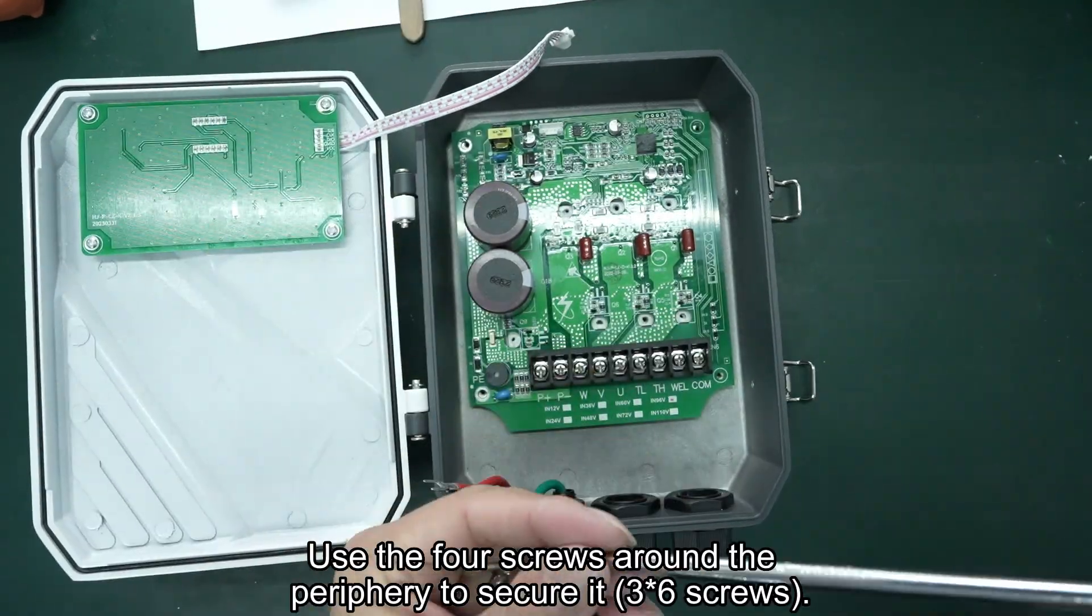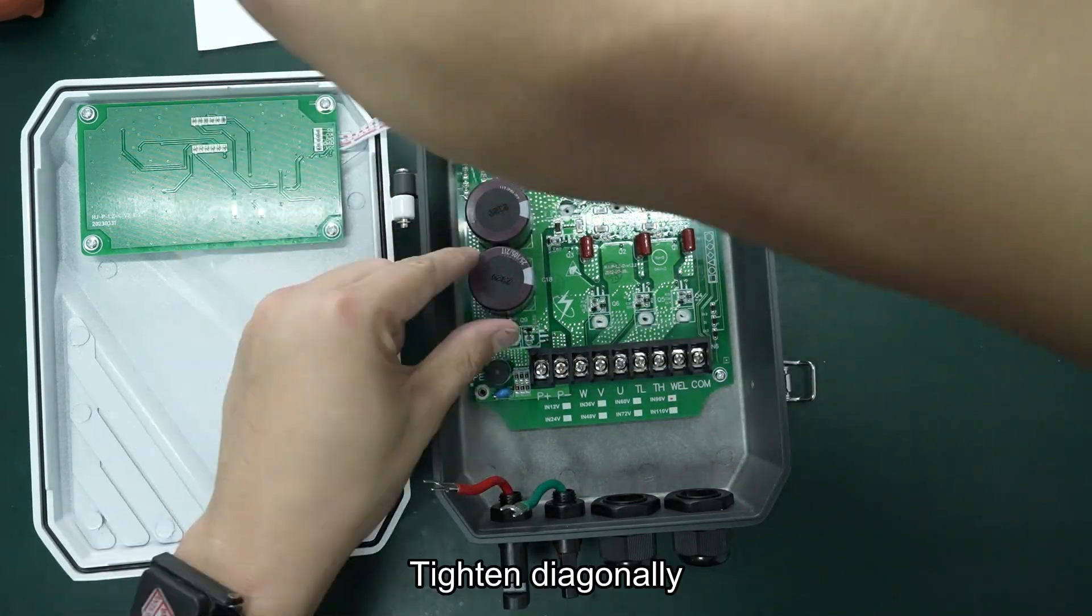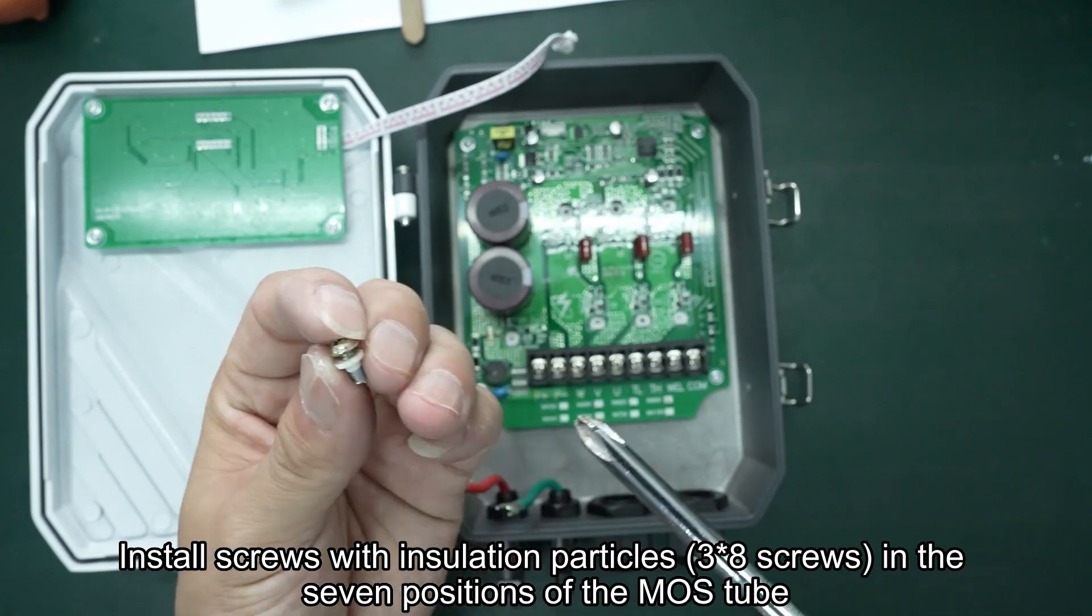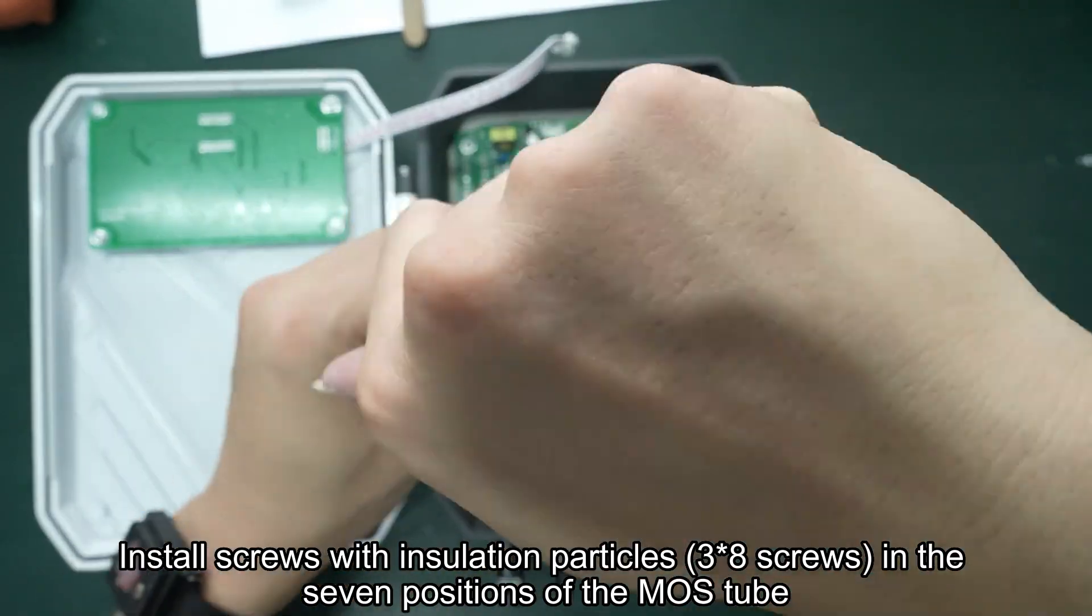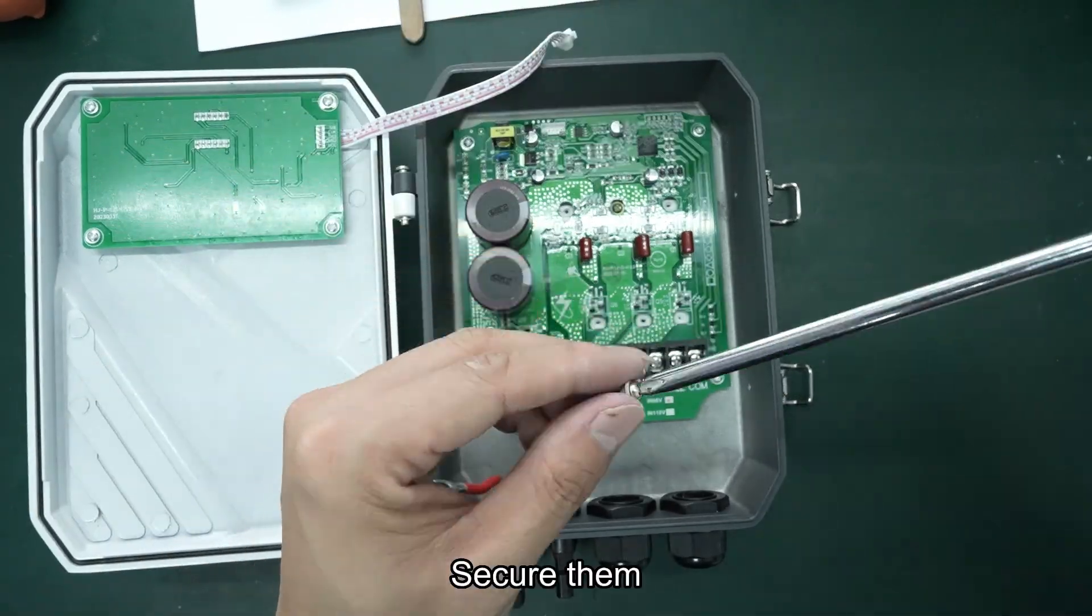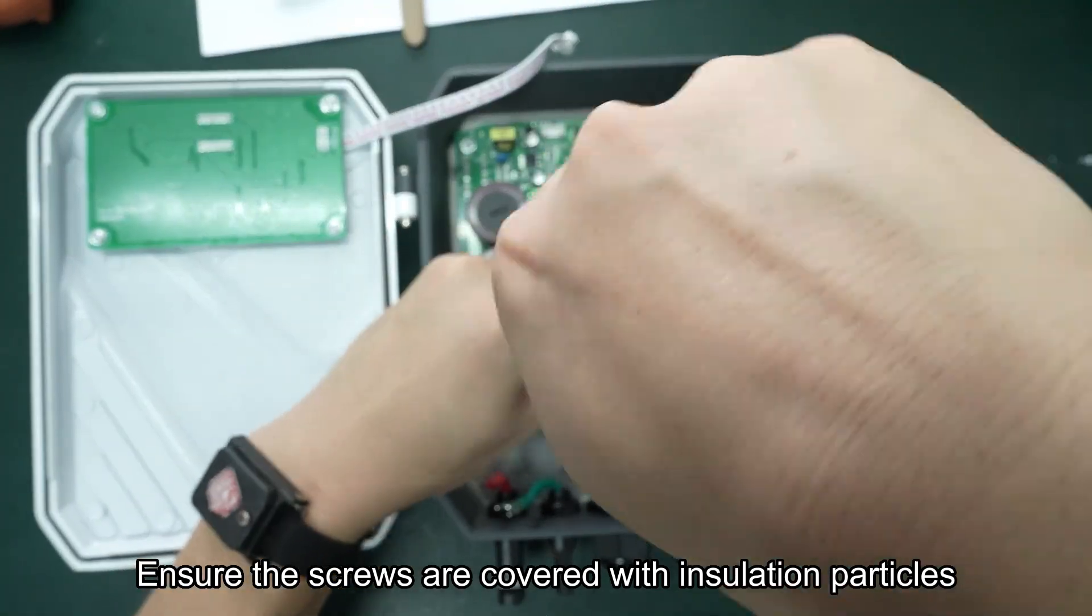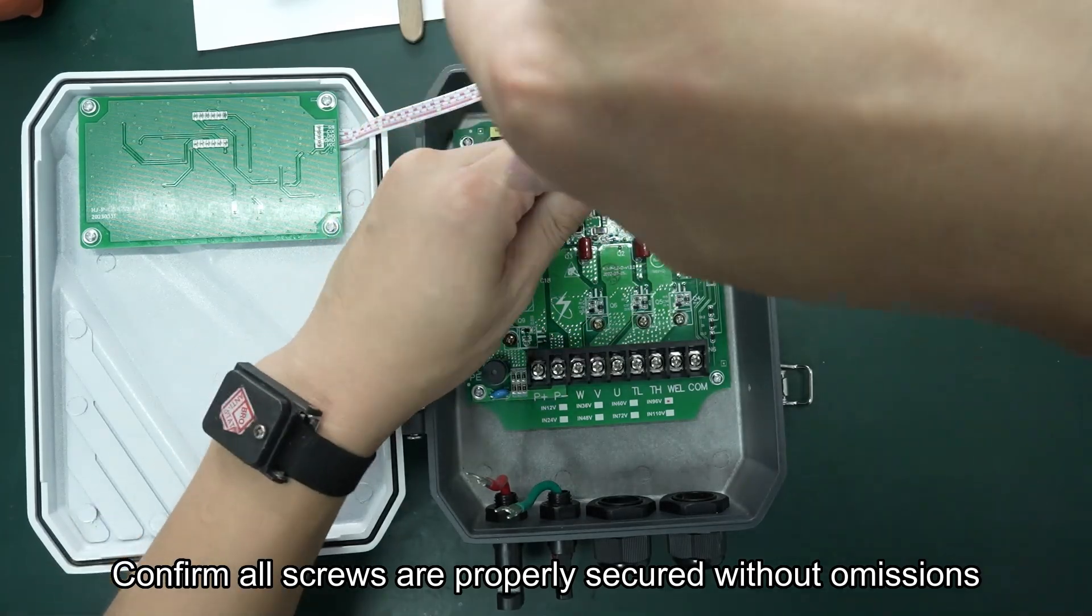Use the four screws around the periphery to secure it. Tighten the screws diagonally. Install screws with insulation particles in the seven positions of the MOSFET. Secure them and ensure the screws are covered with insulation particles. Confirm all screws are properly secured without omissions.